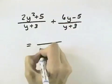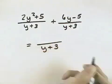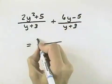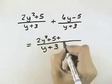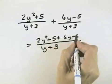So that means y plus 3 will be the denominator of our sum when we add the numerators together. So now we add the 2y squared plus 5 plus the second numerator, which is 6y minus 5.